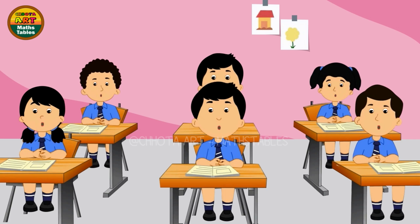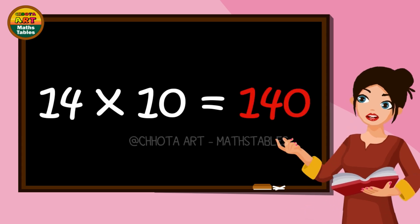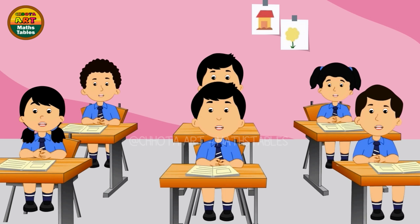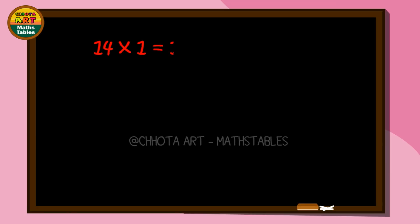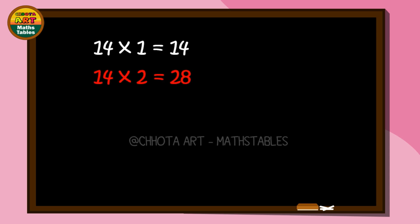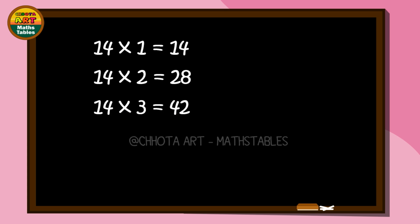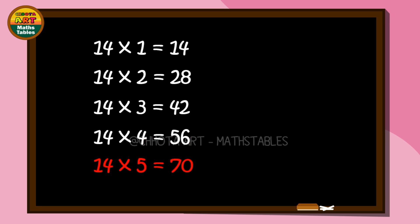14 tens are 140. 14 tens are 140. 14 ones are 14. 14 ones are 14. 14 twos are 28. 14 twos are 28. 14 threes are 42. 14 threes are 42. 14 fours are 56. 14 fours are 56. 14 fives are 70. 14 fives are 70.